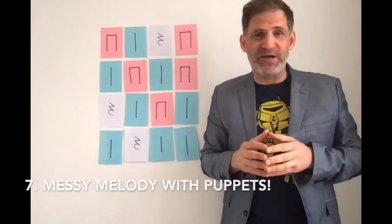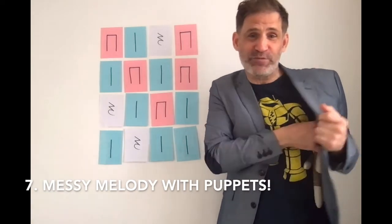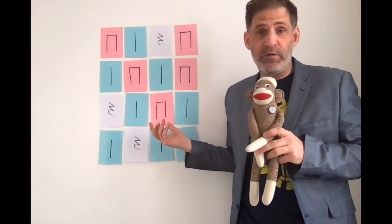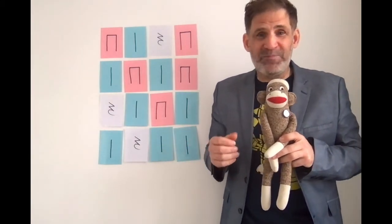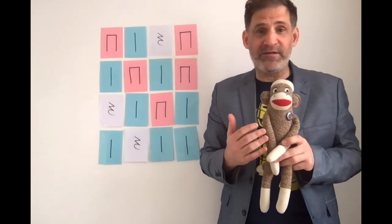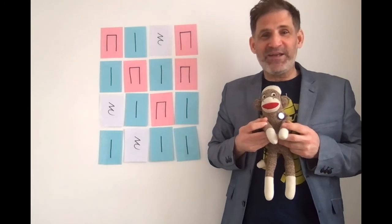No matter what age you're working with, Messy Melody works great with some kind of puppet. So I'd like to introduce you to my friend Sock Monkey. Sock Monkey is going to help us with this activity. Now Sock Monkey is going to play the rhythm in row three, but he's not so good at reading music. So I want you to kindly and gently correct him. He's going to play the melody and he'll probably make a mistake. See if you can find out where the mistake was in Sock Monkey's playing. Ready Sock Monkey? Okay, here we go. One, two, ready, go.